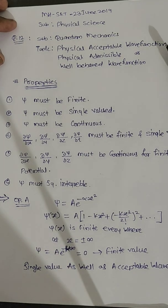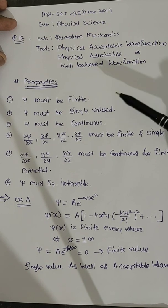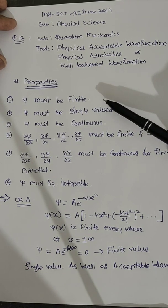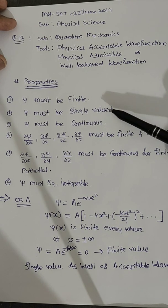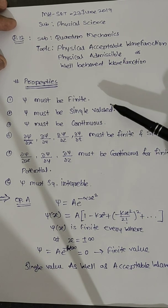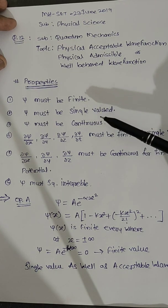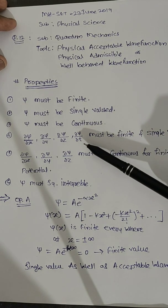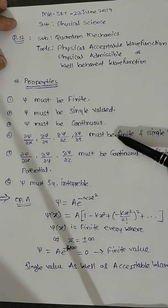A physically acceptable wave function is also called a physically admissible wave function. It must satisfy four properties. First, psi must be finite — the value of psi is finite. Second, psi must be single-valued — the value is single-valued. Third, psi must be continuous.